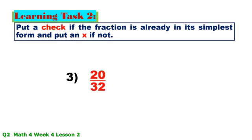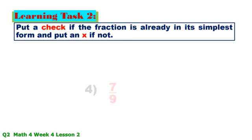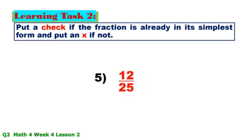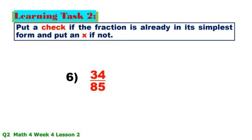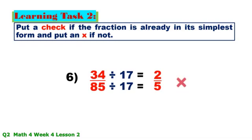Number 3: 20/32 — GCF is 4; 20 ÷ 4 = 5, 32 ÷ 4 = 8, so this is X — not in simplest form. Number 4: 7/9 — there is no GCF for 7 and 9 except 1, so this is in simplest form. Number 5: 12/25 — there is no GCF for 12 and 25 except 1, so this is in simplest form. Number 6: 34/85 — GCF is 17; 34 ÷ 17 = 2, 85 ÷ 17 = 5, so this is not in simplest form.